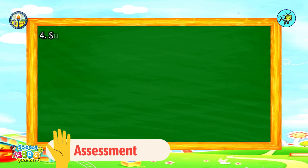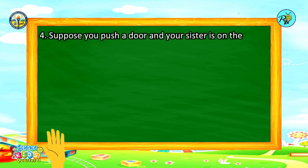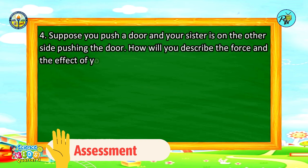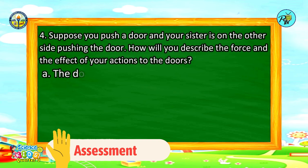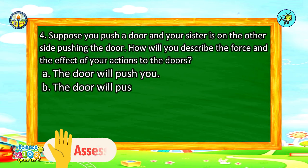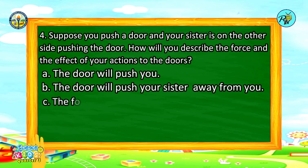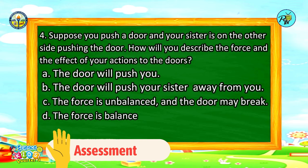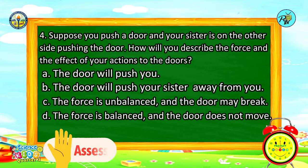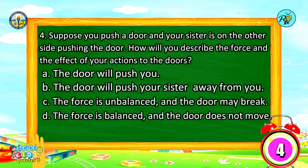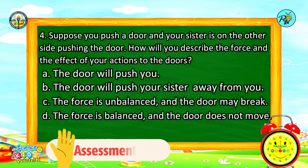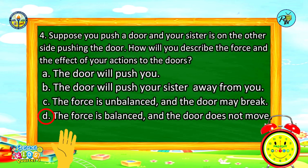Number 4: Suppose you push a door and your sister is on the other side pushing the door. How will you describe the force and the effect of your actions on the door? A. The door will push you, B. The door will push your sister away from you, C. The force is unbalanced and the door may break, D. The force is balanced and the door does not move. Time's up! The correct answer is letter D — The force is balanced and the door does not move.